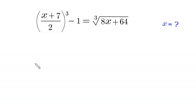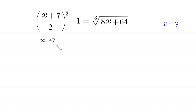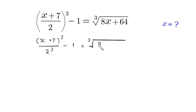Hello, welcome. Today we solve this algebra equation: ((x+7)/2)³ minus 1 is equal to the cube root of 8x+64. We need to find all possible values of x. We start by writing (x+7)³ divided by 2³, minus 1, equals the cube root of 8 times (x+64).